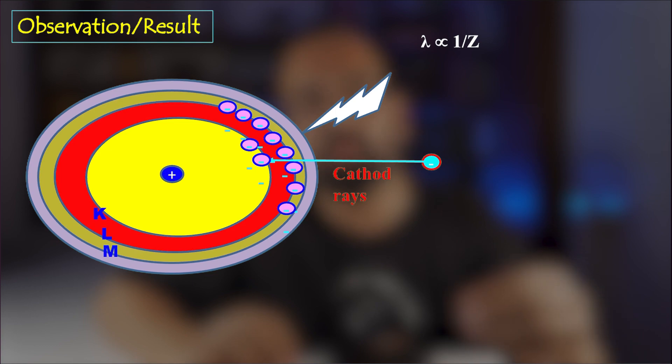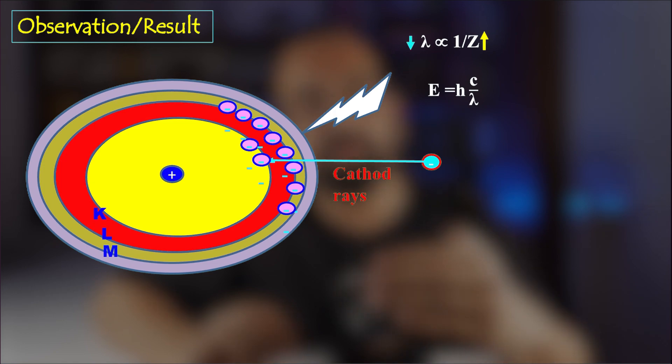So he derived a mathematical equation for his law. He said wavelength is inversely proportional to atomic number means number of electrons. You can say λ is inversely proportional to Z. Means if you will increase the atomic number or the heavier the anode, wavelength will decrease. So energy of X-rays will increase because E is equal to hc by λ. Hence frequency will increase as we know E is equal to h nu.